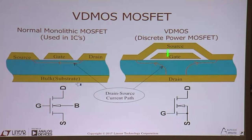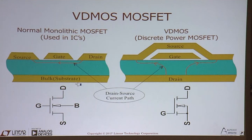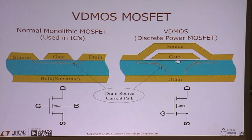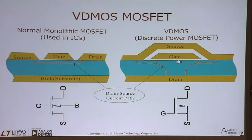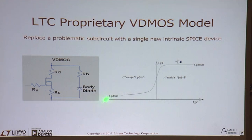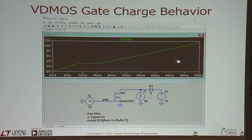All SPICE programs can simulate the monolithic MOSFET because SPICE was about IC design — the letters IC are in the name SPICE, which stands for integrated circuit simulation. But if your IC is driving a power MOSFET, there are no device equations in generic SPICE programs to handle that. At Analog Devices, we developed the device equations for the VDMOS structure. We have a native circuit element that behaves like a power MOSFET and can duplicate the gate charge behavior curves you see on a data sheet — the plot of charge on the horizontal axis vs. gate voltage on the vertical axis.